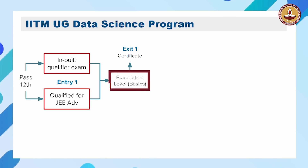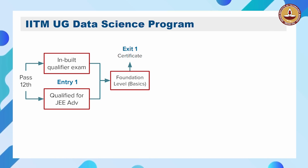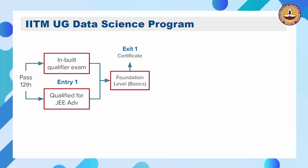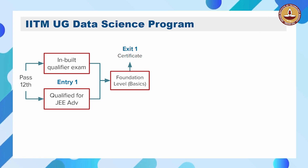Once you qualify, you are admitted to the foundation level, which is a very different aspect of this program. Usually when you get admitted, you are admitted to the degree program and eventually get the degree. In this program, that is not true — you gain admission only to the foundation level. This foundation level is a certificate program with eight subjects that you have to complete, teaching the basics of data science, mathematics, statistics, programming, and some English. If you successfully clear all eight courses, you are eligible to earn a certificate, and you can leave the program at that point if you choose to.